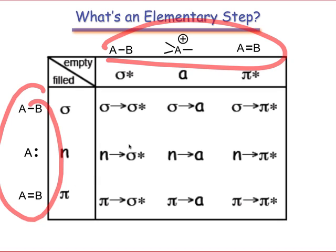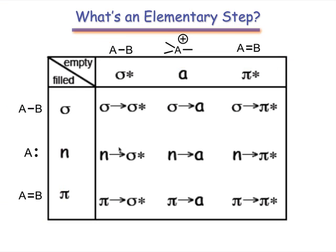Each entry in the table is a unique frontier orbital interaction. Let's place the elementary steps on this table according to the FMO interaction involved in each.